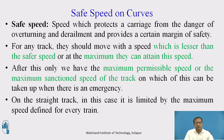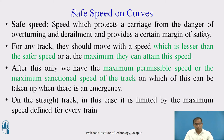After the safe speed, we have the maximum permissible speed. The sanction speed comes after this safe speed — meaning there is a maximum sanction speed beyond safe speed, but it is to be used only during emergency conditions with prior permission from the track engineer. Otherwise, you are not supposed to reach the sanction speed. On a straight track, the speed is limited by the maximum speed defined for every train.